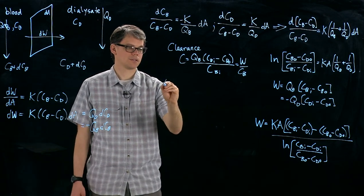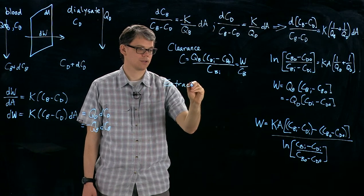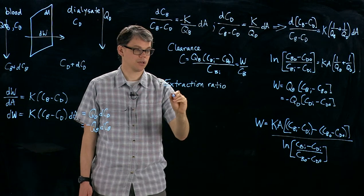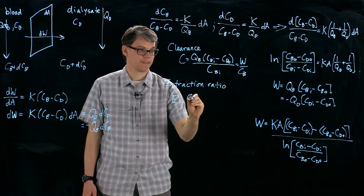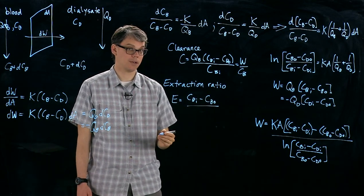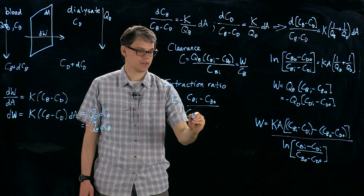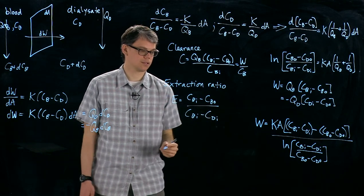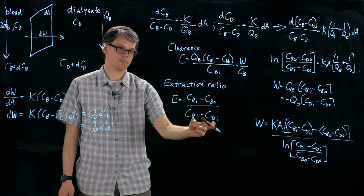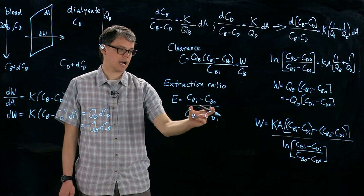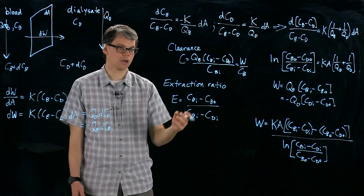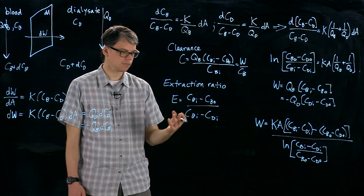Another interesting measure to describe a dialyser is called the extraction ratio and the extraction ratio is simply the change in concentration in the blood over the difference in the inlet concentrations. And so this is a ratio, it's unitless, but it's attempting to say that this change is the biggest change that could be accomplished in this dialyser. How much change here in the numerator did we actually accomplish? So it should just be a number from zero to one for a given flow rate.